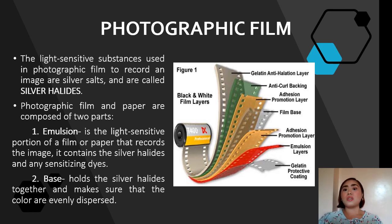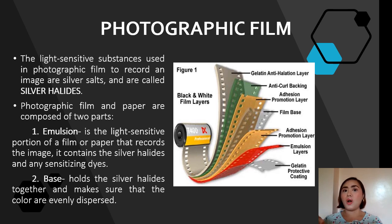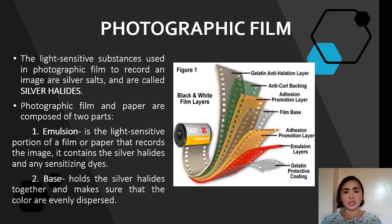The second important layer is your base. Looking at the diagram, the bases are: the film base located at the center, the gelatin antihalation layer at the top, and the gelatin protective coating at the bottom. Those are the three bases found in your photographic film. Your base holds the silver halides together to make sure colors are evenly dispersed, serving as a support for the emulsion layer.